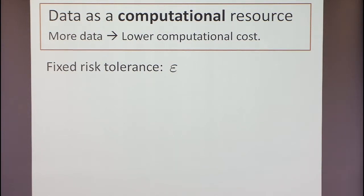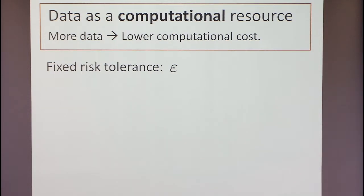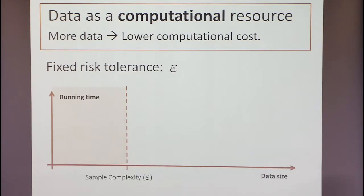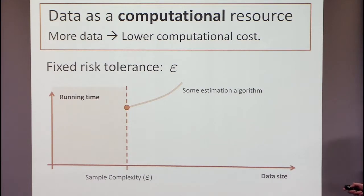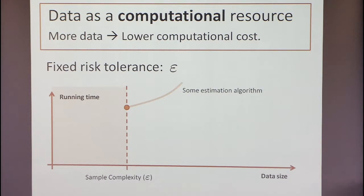Unlike what Sham said, I'm not going to think about competing with the ERM. I'm going to fix a certain risk tolerance, which in many applications is what you want — you say I want to guarantee a certain statistical risk. With that statistical risk is associated the sample complexity of the learning or estimation problem, below which if you have less data you cannot solve the problem. Once you are above that point, you choose an estimation algorithm with a certain running time, and as you increase data size it requires more and more time but gives less and less risk — though we only care about guaranteeing the epsilon risk.